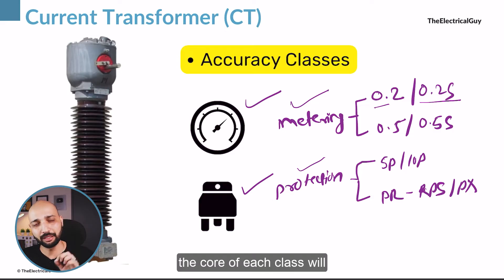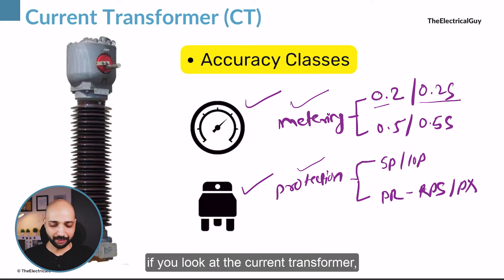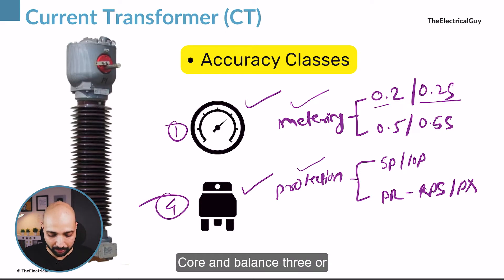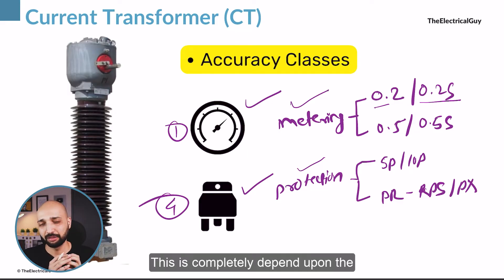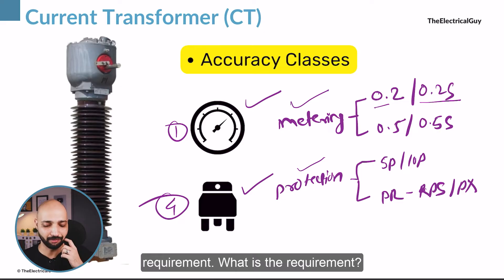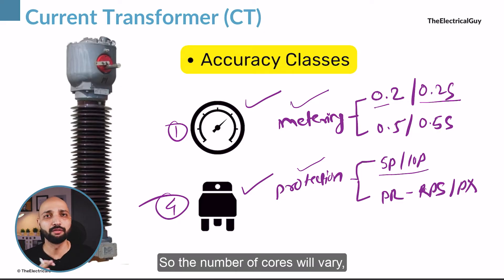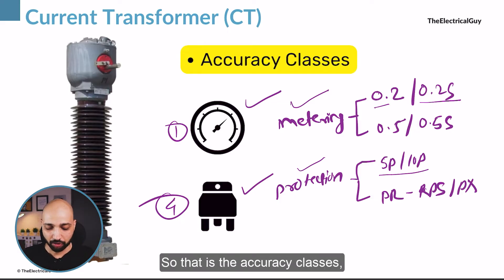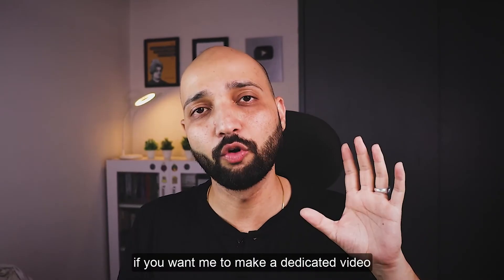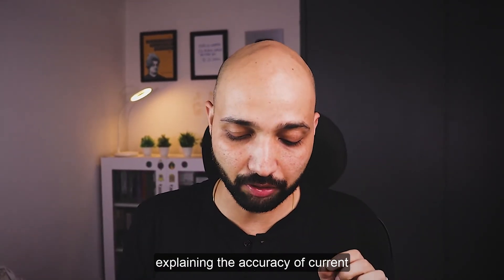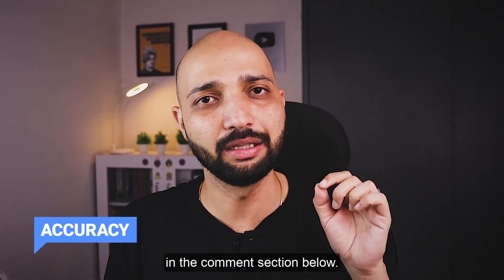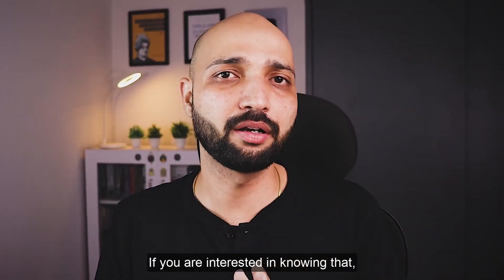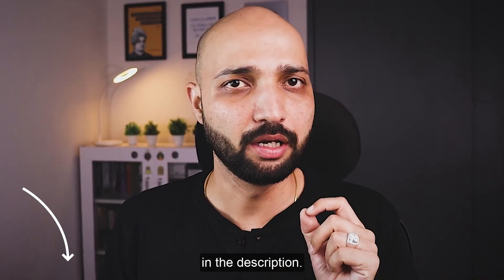For the protection core, the classes are 5P, 10P, PS, and PX. Each core of the CT will be dedicated to either metering or protection. A current transformer can have one or two metering cores and three or four protection cores depending on the requirement — generally ranging from two to six cores in total.